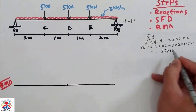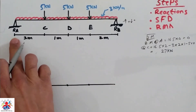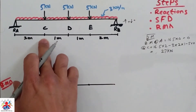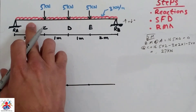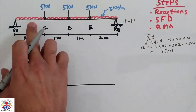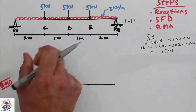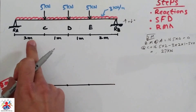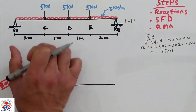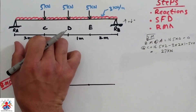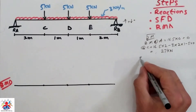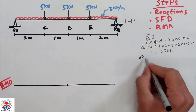The bending moment at C works out to 27 kilonewton·meter. This is calculated as 16.5 × 2 for the reaction, then minus the UDL contribution: 3 × 2 × 1 (where the UDL always acts at its mid-span, so the distance to C is 1 meter and the span is 2 meters), giving 27 kN·m.